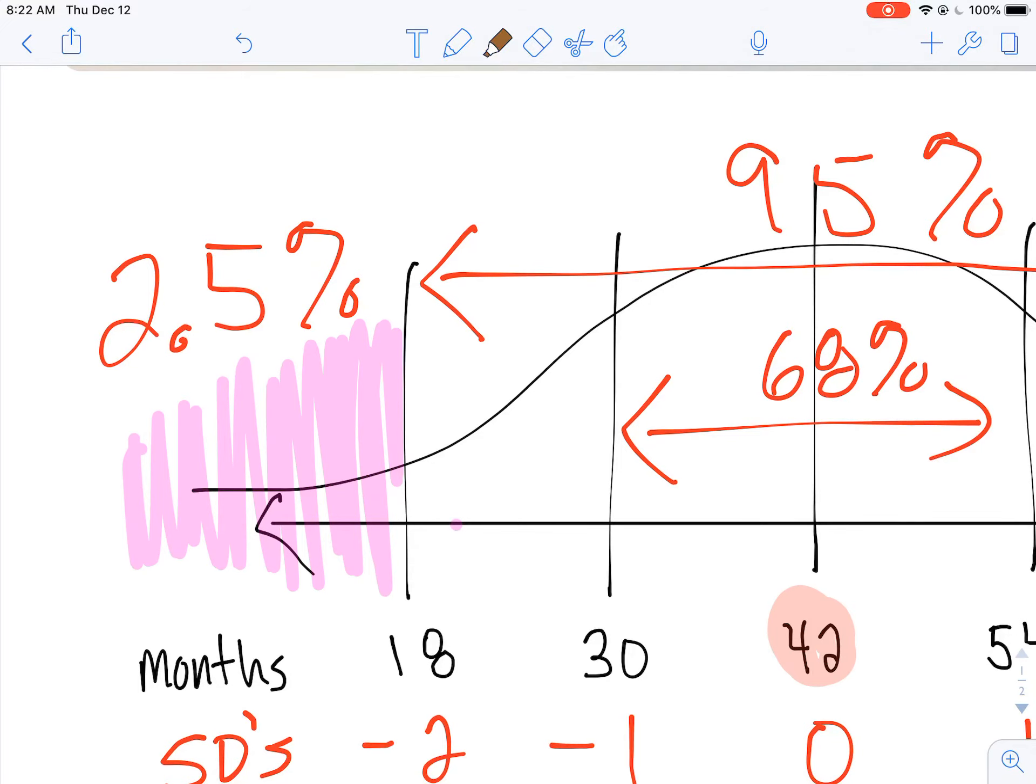So if I go in my normal distribution here, I can even just kind of ballpark it. Like, all right, this is about 2.5%. So I can go out a little bit further here and say, yeah, this is probably going to be close to another 5% right here.